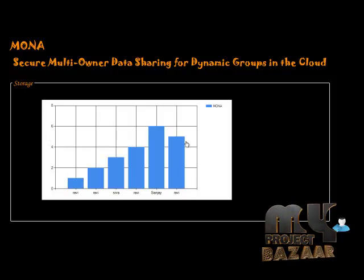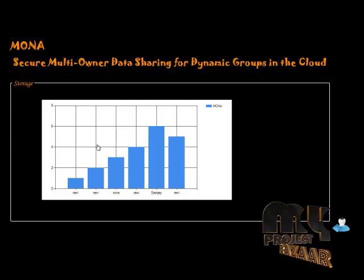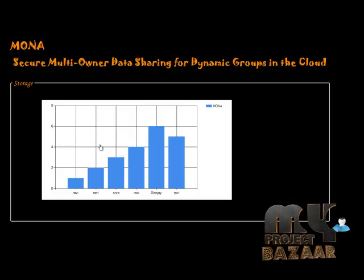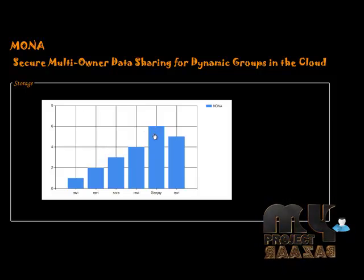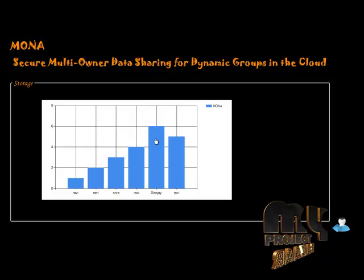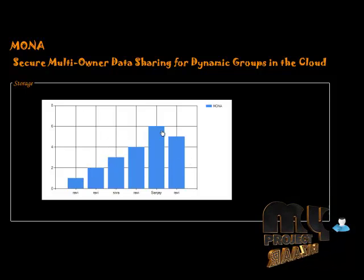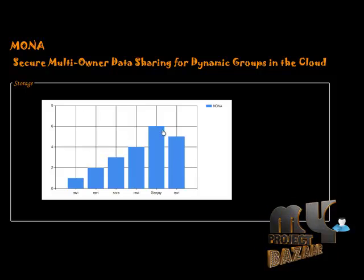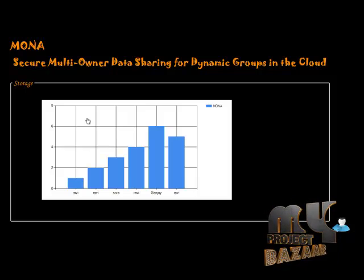This is the identity only for the group manager. This is the storage capacity used by users — what storage each user is using can be easily identified. The file deletion part can be easily calculated at this level, easily reducing complexity. This is the project of the group manager level. Thank you.